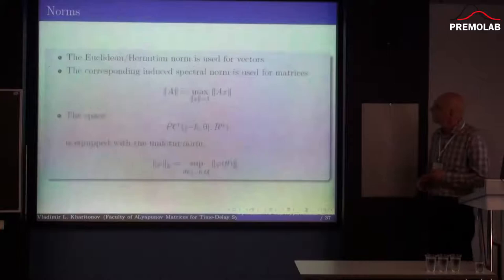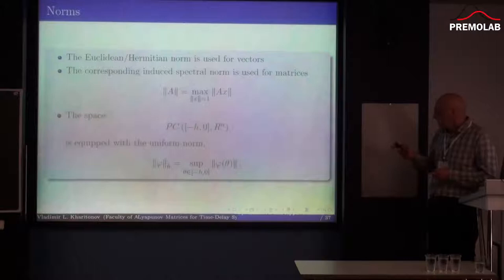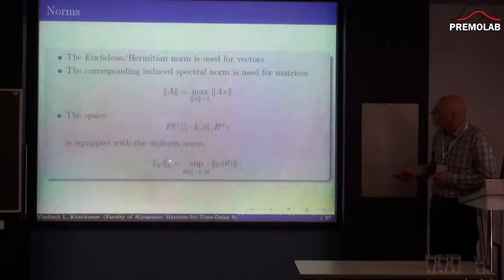I would like to use the Euclidean norm for vectors and the corresponding induced spectral norm for matrices. For the initial function, I will use the uniform norm, which I supply with a sub-index H to differentiate it from the norm of vectors.